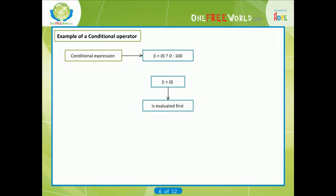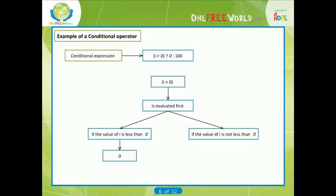Example on conditional operator. In the conditional expression shown below, assume that i is an integer variable: i < 0 ? 0 : 100. The expression i < 0 is evaluated first. If it is true, that is, if the value of i is less than zero, the entire conditional expression takes on the value zero. Otherwise, if the value of i is not less than zero, the entire conditional expression takes on the value 100.